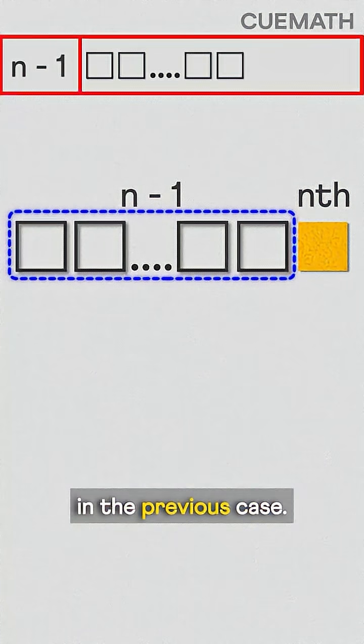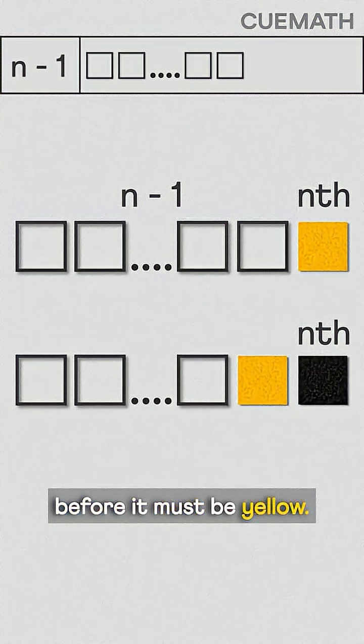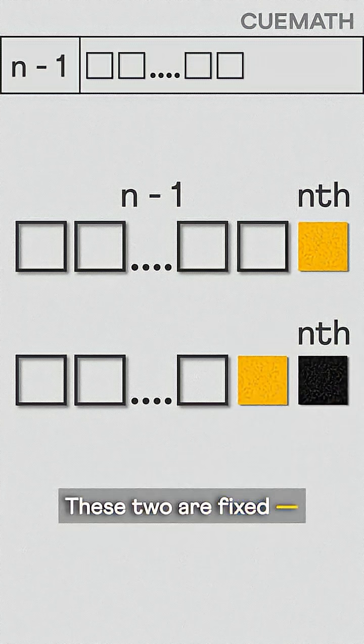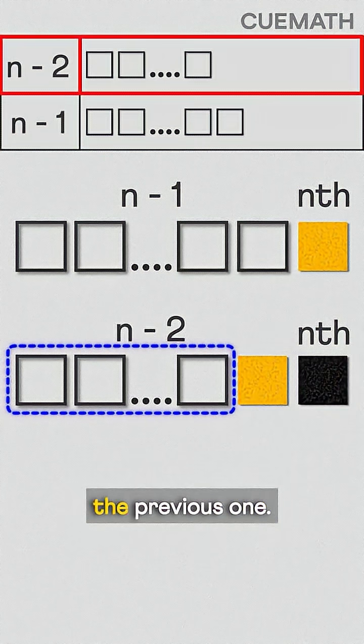If it's black, the tile before it must be yellow. These two are fixed. So we just paint n minus two tiles, which we solved in the case before the previous one.